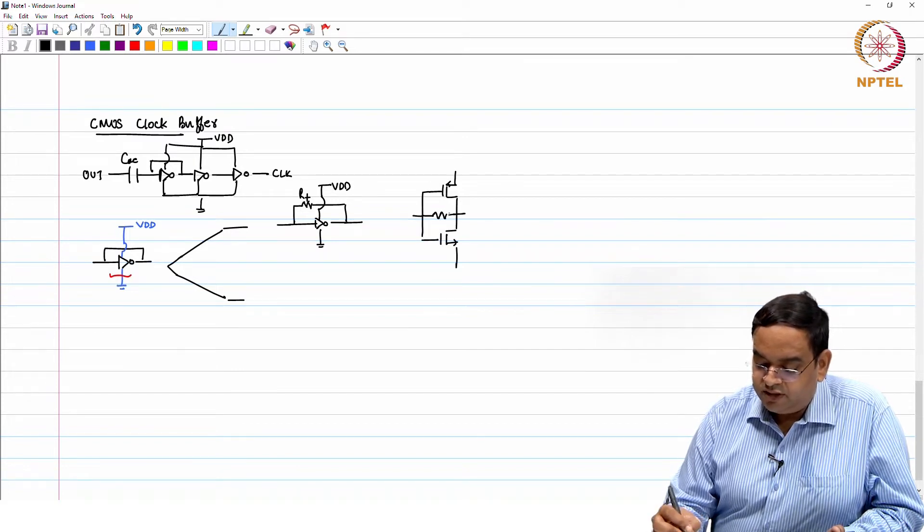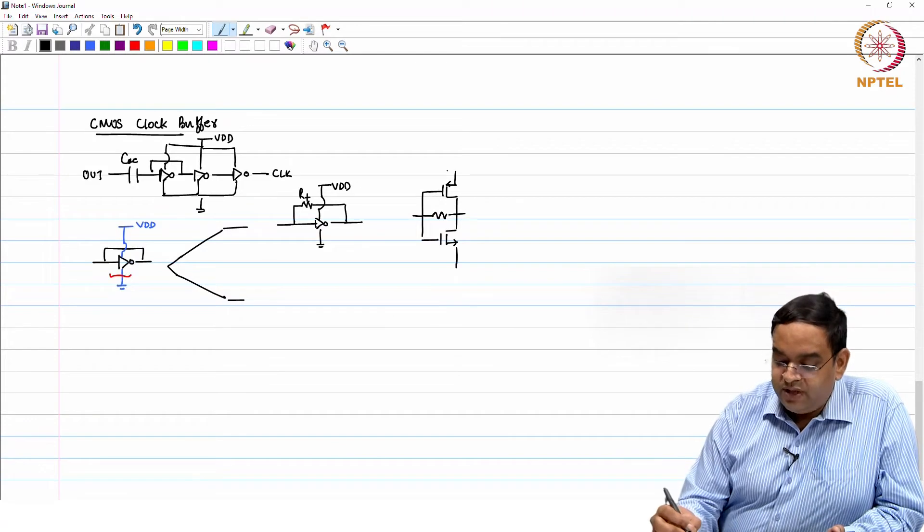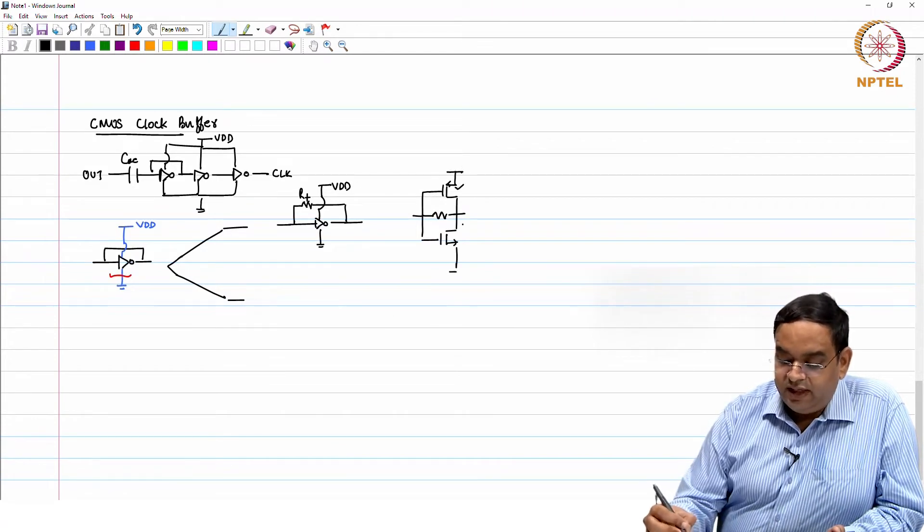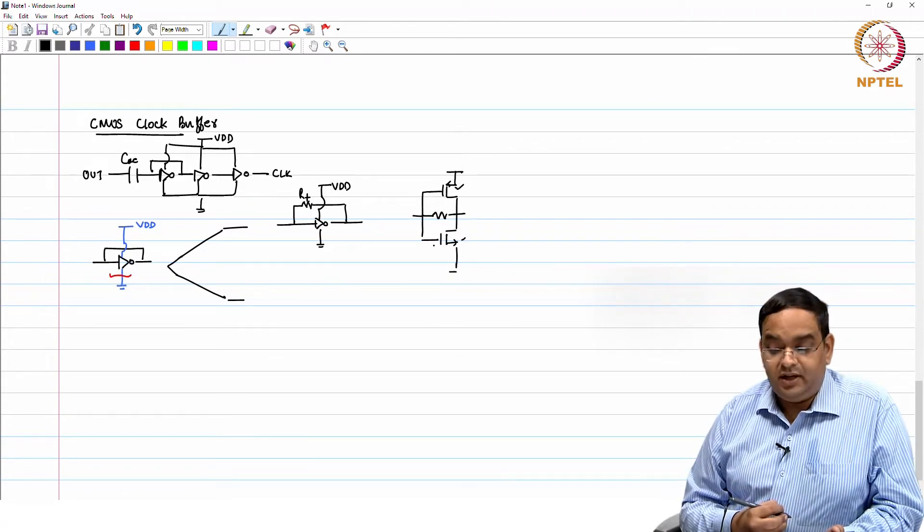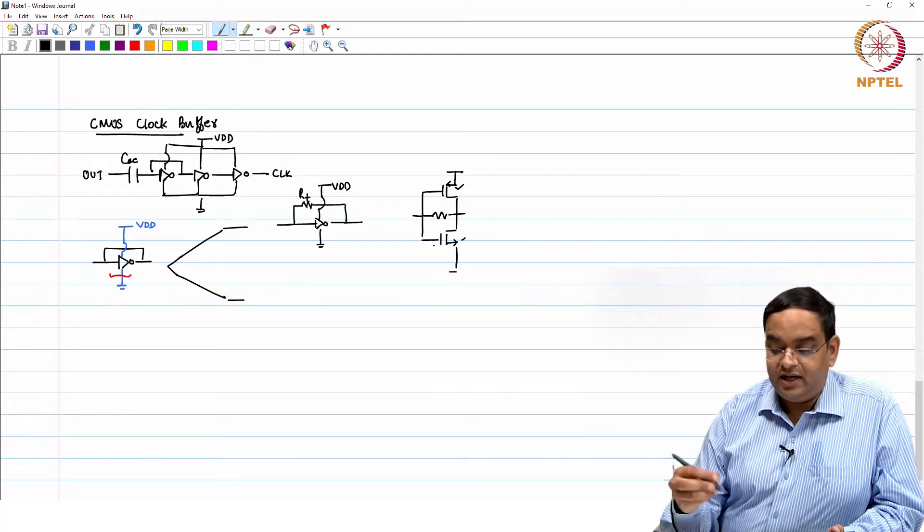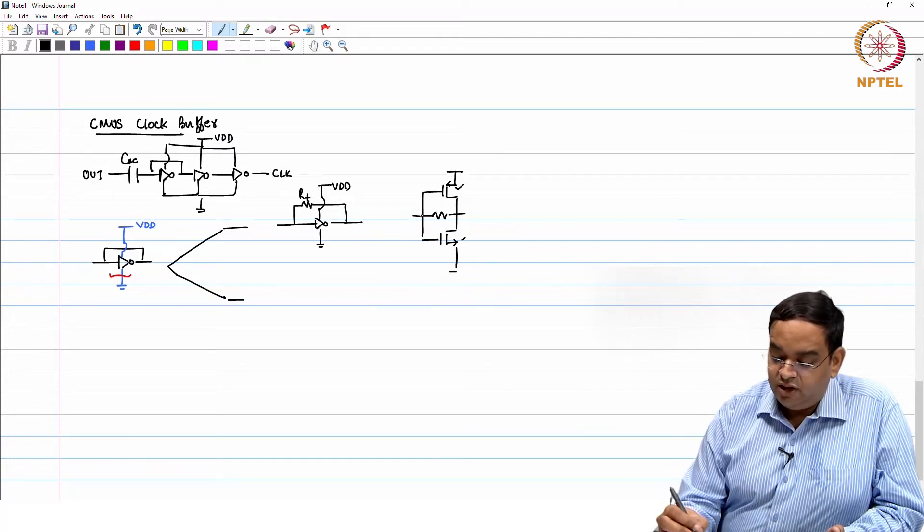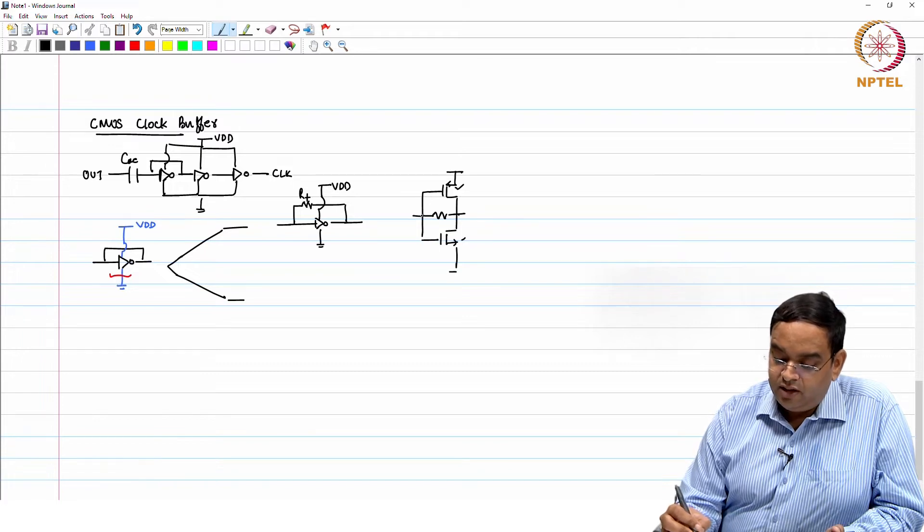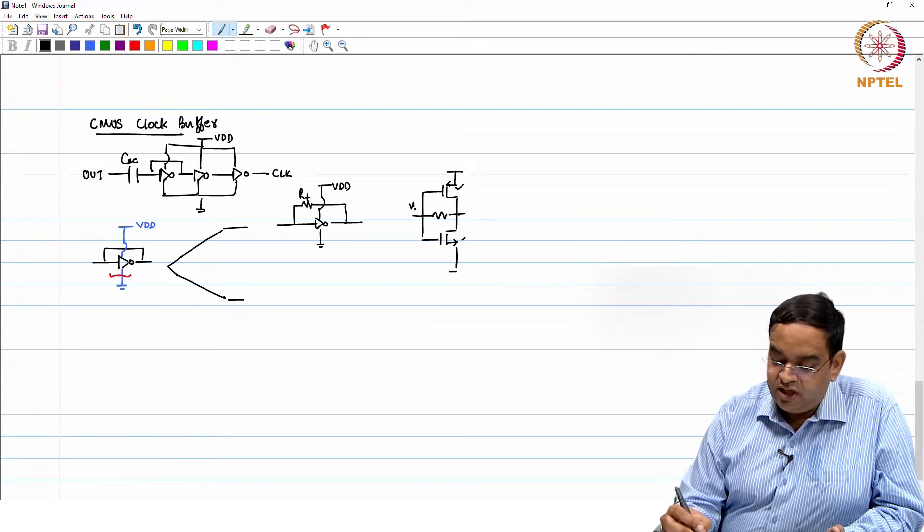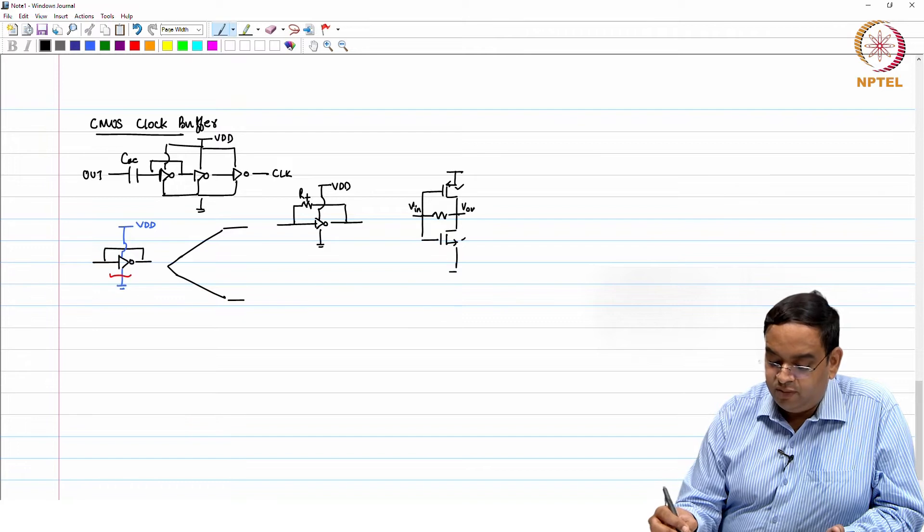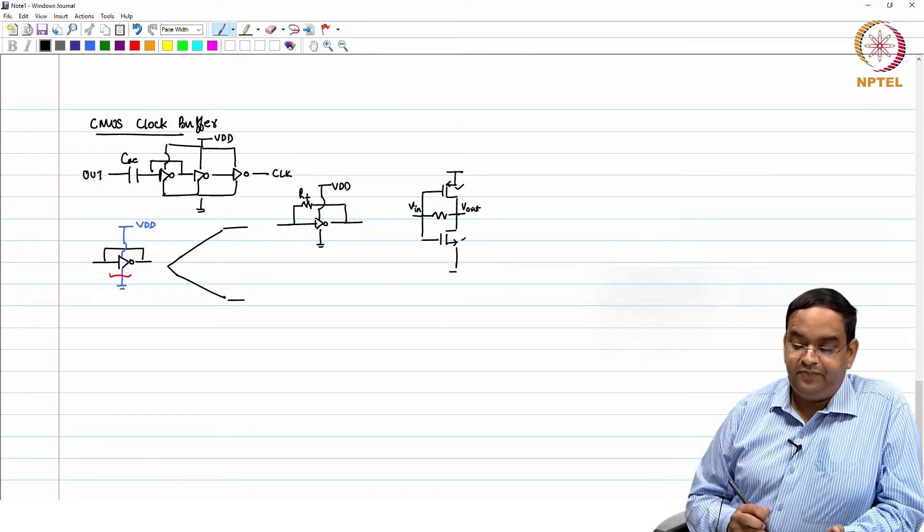So it is going to be biased like this. PMOS and NMOS, they are still conducting current always and they are biased in saturation. Your DC operating point is such a way that this potential Vin and Vout they both are same.